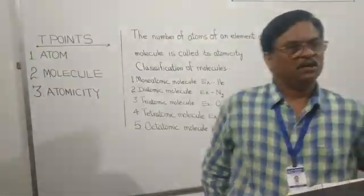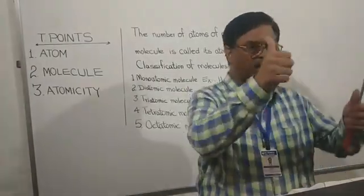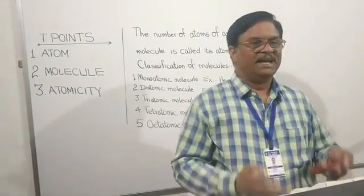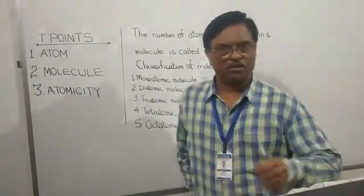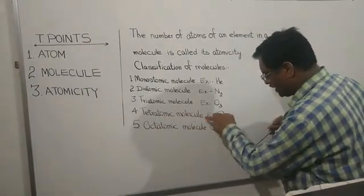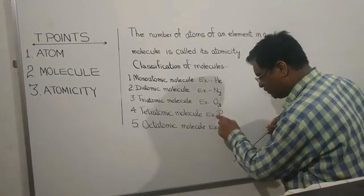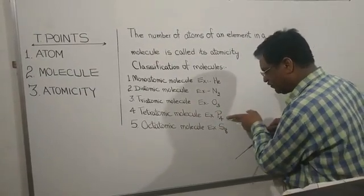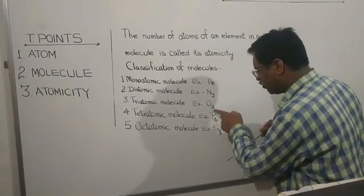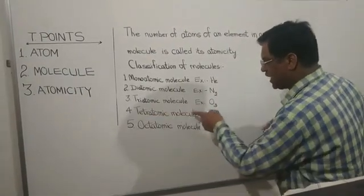Now comes the tetraatomic molecule. When four atoms are present in one molecule, it is said to be a tetraatomic molecule. Example: phosphorus molecule P4. Nothing is written before P, therefore it is one molecule. The subscript four is written, therefore four atoms of phosphorus are present in one molecule. Therefore P4 is known as a tetraatomic molecule.